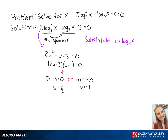Now we can plug in u equals 3 halves and u equals negative 1 into the equation u equals the log base 3 of x. For u equals 3 halves, we get 3 halves equals the log base 3 of x. Using our logarithmic properties, this becomes 3 to the 3 halves equals x, which becomes 3 times the square root of 3 equals x.